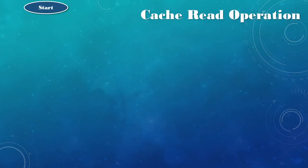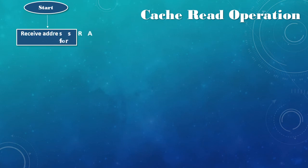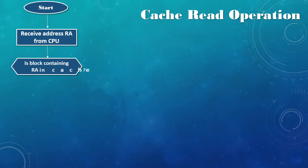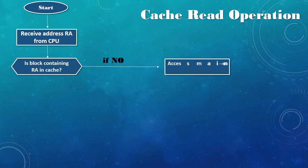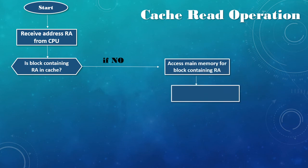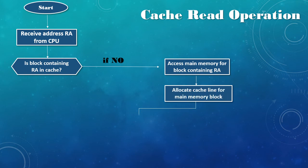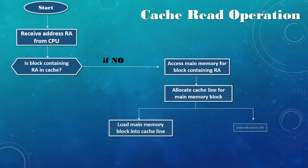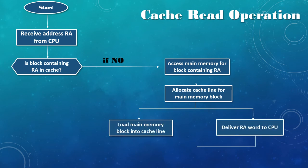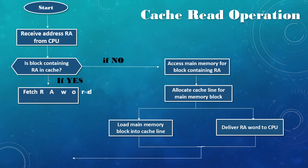Cache read operation: Start, then receive address from the CPU. Check if the block containing that address is in cache. If no, access main memory for the block containing that address, allocate a cache line, and load the main memory block into the cache line, then deliver the requested word to the CPU. If yes, fetch the requested word and deliver to CPU. Then end.